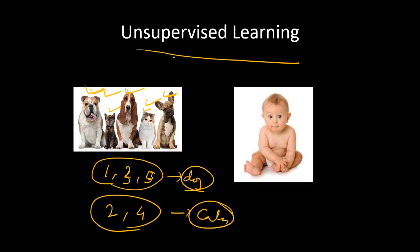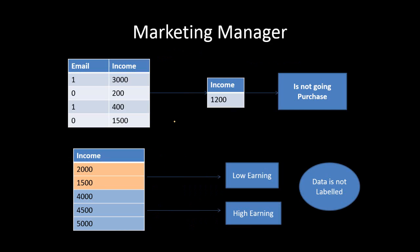Now, labeling them as dog or cat is not possible because the baby doesn't know anything about dogs and cats. So that is known as unsupervised learning, wherein you actually don't label your data. In the previous case, the baby was given the labeling information, but here we have not shown dogs and cats before and haven't labeled them as dogs and cats.